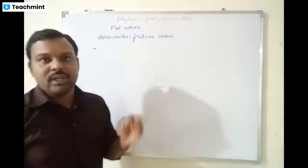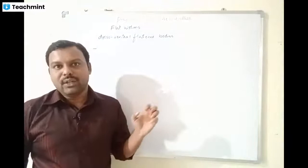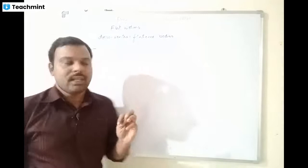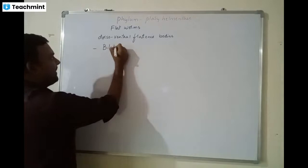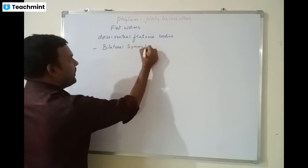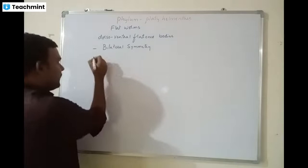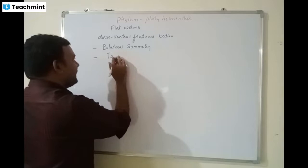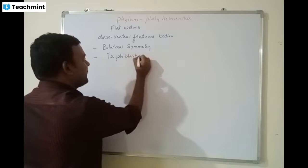This is the first time we see bilateral symmetry. In Porifera, most are asymmetrical. In Cnidaria and Ctenophora, they show radial symmetry. But Platyhelminthes is the first group of animals to start showing bilateral symmetry — a very unique character. They are also the first group of triploblastic animals.